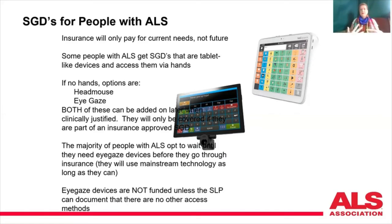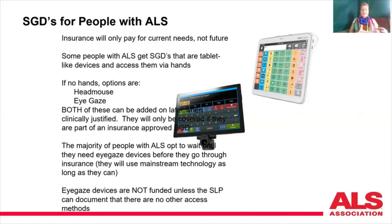The majority of people with ALS opt to wait until they need an eye gaze system before going through insurance. They'll use an iPad or iPhone until the time comes that they can't, and then we go through insurance. Eye gaze devices are not funded unless the SLP can document that there are no other access methods — that's a Medicare criteria.